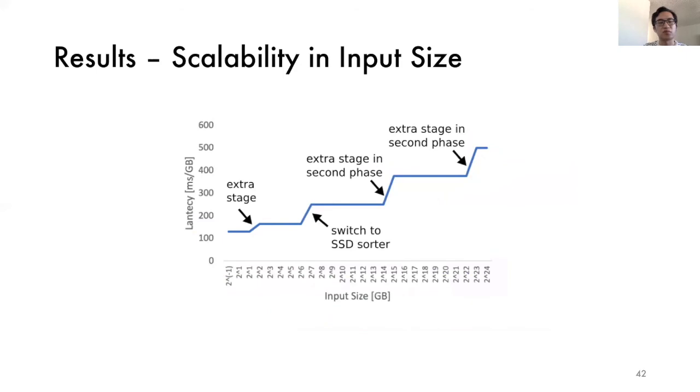With the systematic approach we proposed, we can now form a big picture of how the performance looks like when the size of the datasets ranges from gigabyte to terabyte scale using a single FPGA based merge sorter. As we can see, the performance decreases at four distinct points. The first point comes when there is one more merge stage in DRAM sorter. The second point comes when we switch from DRAM sorter to SSD sorters to accommodate a larger datasets. The third and fourth points come when there are more merge stages in SSD sorter as the datasets becomes even larger.